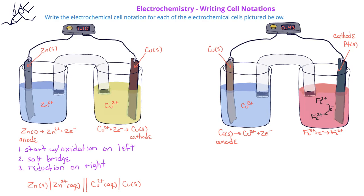So we would write this cell notation as copper solid separated by a single vertical line with copper 2 plus in the aqueous phase. We then represent the salt bridge with a double vertical line, and in the reduction half-cell, we have iron 3 plus aqueous separated by a comma with iron 2 plus aqueous. The phase boundary with the inert platinum electrode is a single vertical line, and then we write the platinum solid.